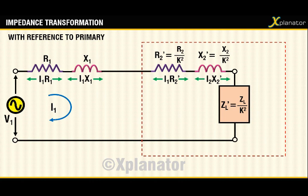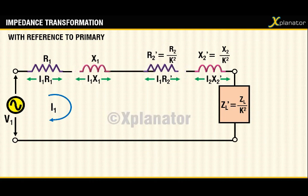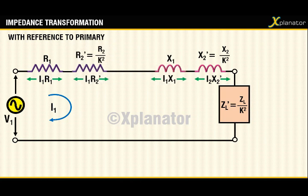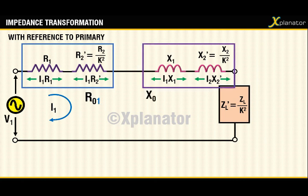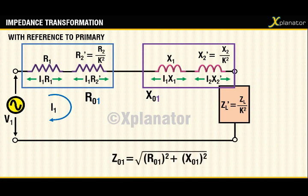Since you have two resistances and two reactances, combine them both individually. The combined resistance will be r1 plus r2 dash, written as r01. Since we are referring the circuit with respect to primary we write a 1 next to r0, so the combined resistance is r01. Similarly, x1 plus x2 dash gives x01. The equivalent impedance with respect to primary is z01, given by the square root of r01² plus x01².